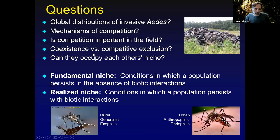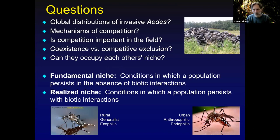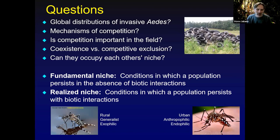I'll describe whether we expect competitive coexistence between these two species or competitive exclusion, and ultimately try to answer: can each of these species occupy the other's niche — could one replace the other if one was successfully suppressed? I'll mention two aspects of ecological niche. The fundamental niche is a description of the conditions in which a population persists in the absence of any biotic interactions. The realized niche defines conditions in which a population persists with whatever biotic interactions, like interspecific competition, might occur.